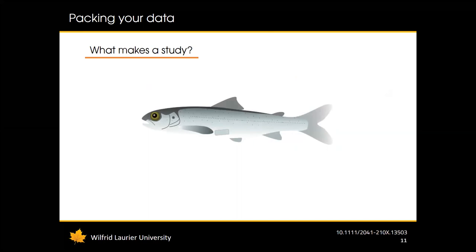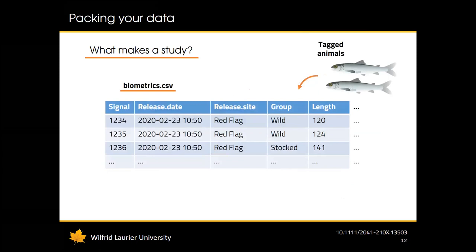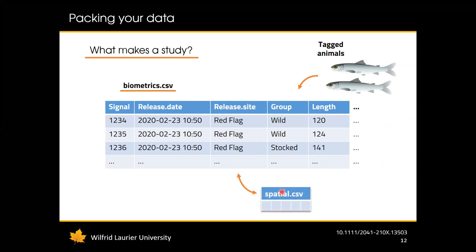Tagged animals have different kinds of information: biological information like origin, length, and samples; tag information like code space, signal, manufacturer, and battery life; and release site information including location and time. This can be stored in a table called biometrics.csv, which has the signal and code space of the tag, the release date, release site, and other relevant columns like groups or biometric measurements. The release site must match the name of the release station in the spatial.csv file.